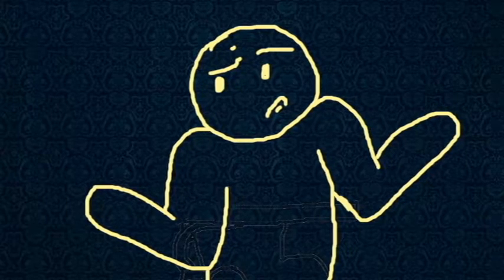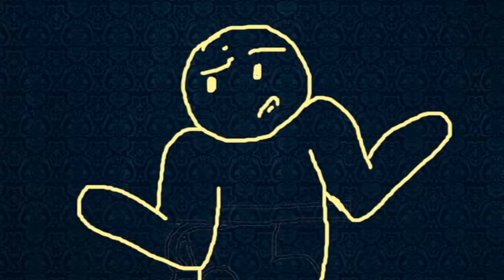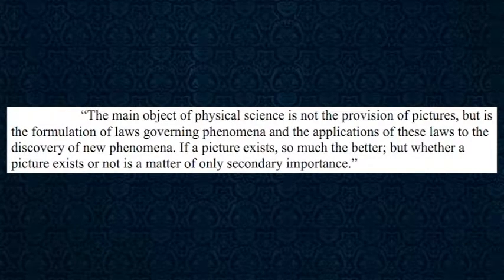Due to its nature, there doesn't happen to be a diagram for this particular atomic model. Dirac's thoughts on this matter were crystallized with this particular quote: The main object of physical science is not the provision of pictures, but is the formulation of laws governing phenomena and the applications of these laws to the discovery of new phenomena. If a picture exists, so much the better, but whether a picture exists or not is a matter of only secondary importance.